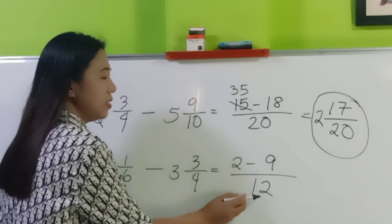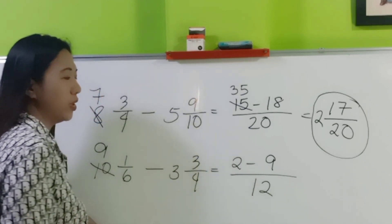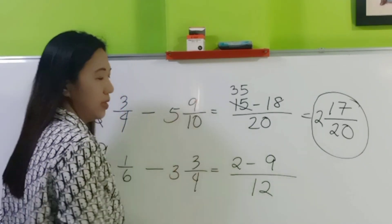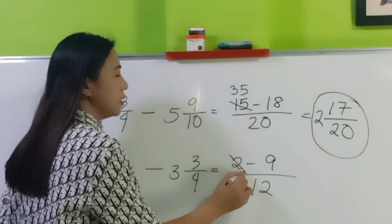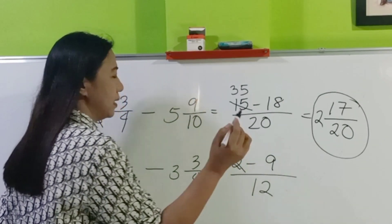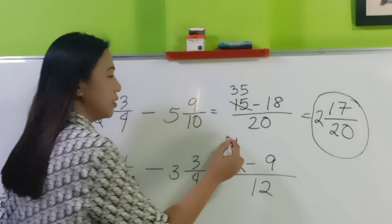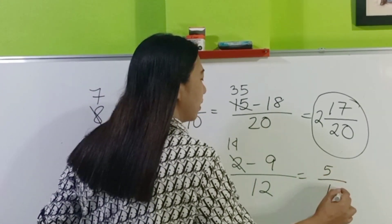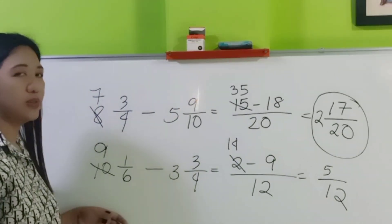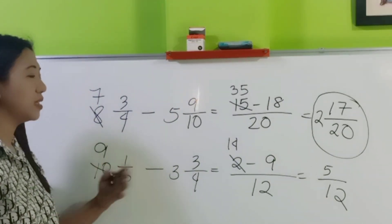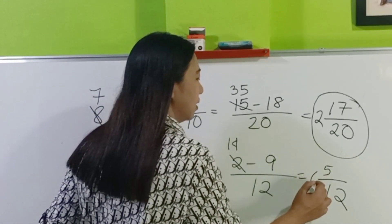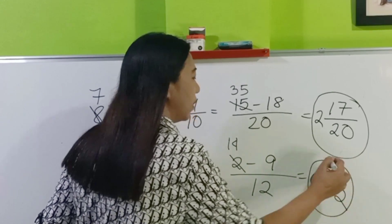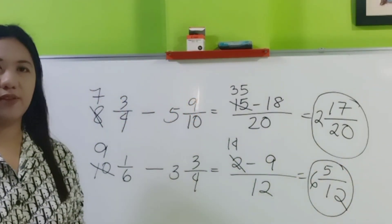Next, just add the denominator to the minuend. So 12 plus 2 is 14. Next, 14 minus 9 is 5 over 12. Don't forget the whole numbers. 9 minus 3 is 6. So we have now 6 and 5 twelfths.